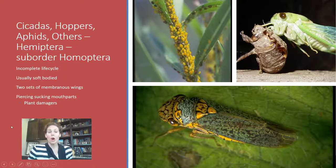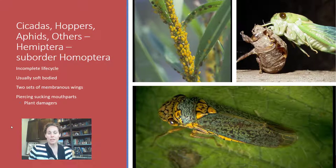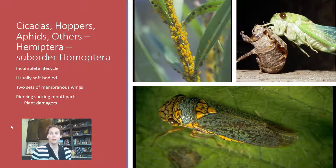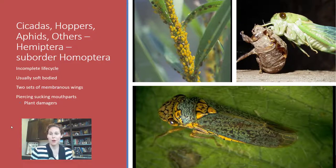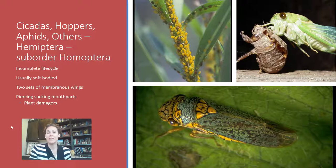The suborder Homoptera includes the softer-bodied hemipterans where we don't really see that triangular look. These are aphids, cicadas, leafhoppers, treehoppers, and planthoppers. They generally have fairly soft bodies — though sharpshooters, leafhoppers, and cicadas are somewhat hard-bodied. They have two sets of totally membranous wings if they have wings at all, so there's no half-hard, half-soft. All of them have piercing and sucking mouthparts, and every single one is a plant feeder.